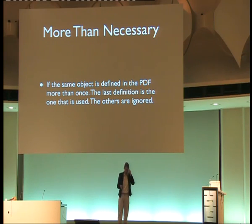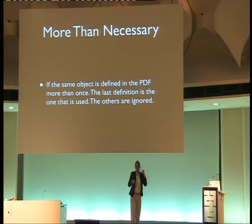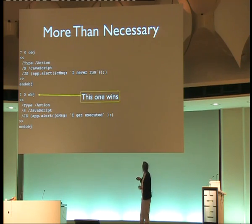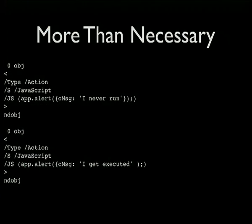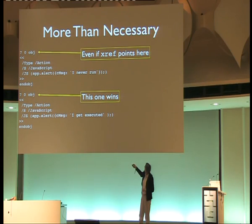You can also define an object more than once. It doesn't quite explicitly say what the behavior is in the spec, although in a sense you can do infinite revisions on all objects just by appending new ones to the end — that's pretty much the behavior it follows, even if you don't quite do it the way the spec says. So if you define object seven twice, the last one is the one that actually runs. Even if you point your cross-reference table at the first one, it still runs the last one.